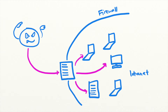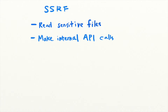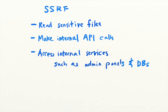Using the ability to forge requests from trusted servers, an attacker can conduct all kinds of attacks on the network. Depending on the permissions given to the vulnerable server, an attacker might be able to read sensitive files, make internal API calls, and access internal services like admin panels and databases.